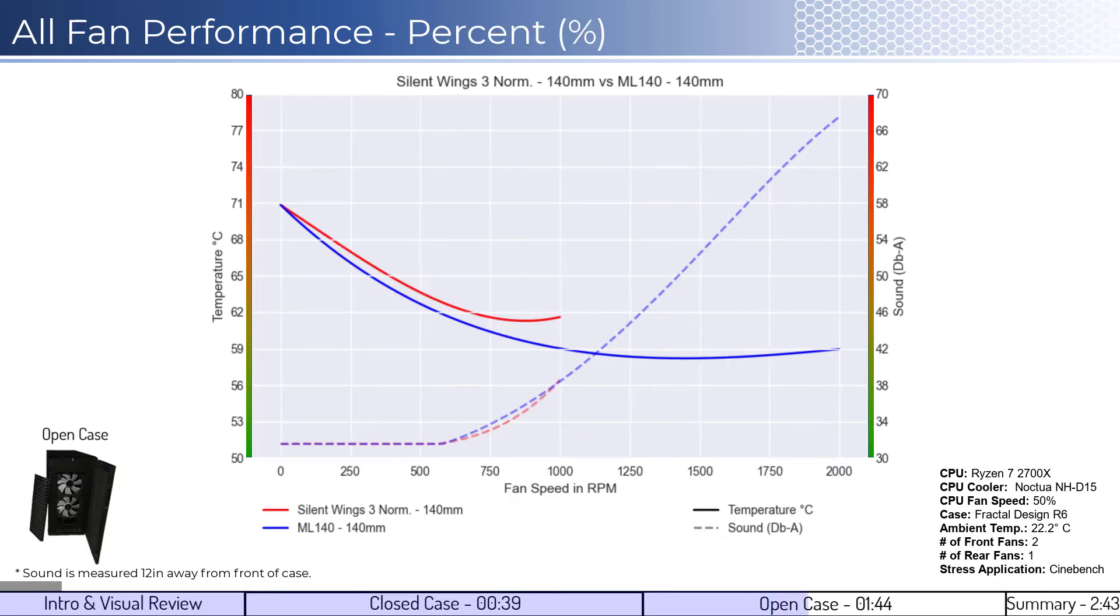When considering performance on an RPM basis, both fans' cooling performance are consistent until approximately 600 RPM, where the ML140 fan begins to outperform. When considering noise, both fans are aligned across comparable RPMs.